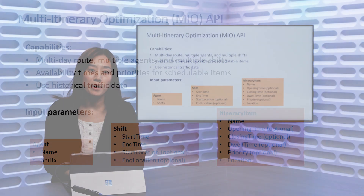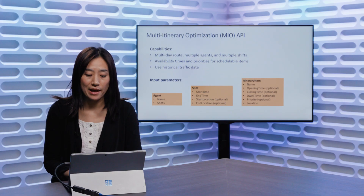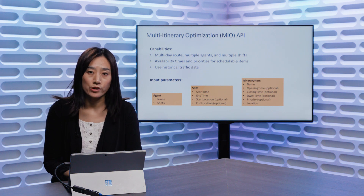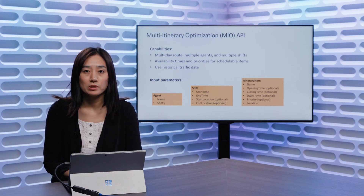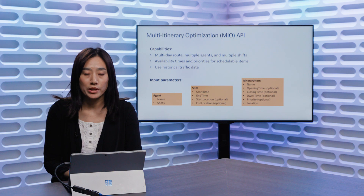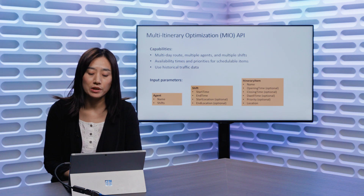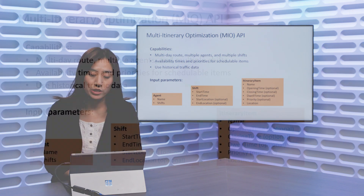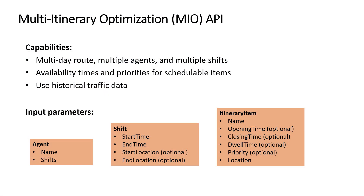The Multi-Itinerary Optimization API can handle multi-day routes, multiple agents, multiple shifts, available time windows and priority of each location, the dwell time at each location, while considering the predictive traffic time.